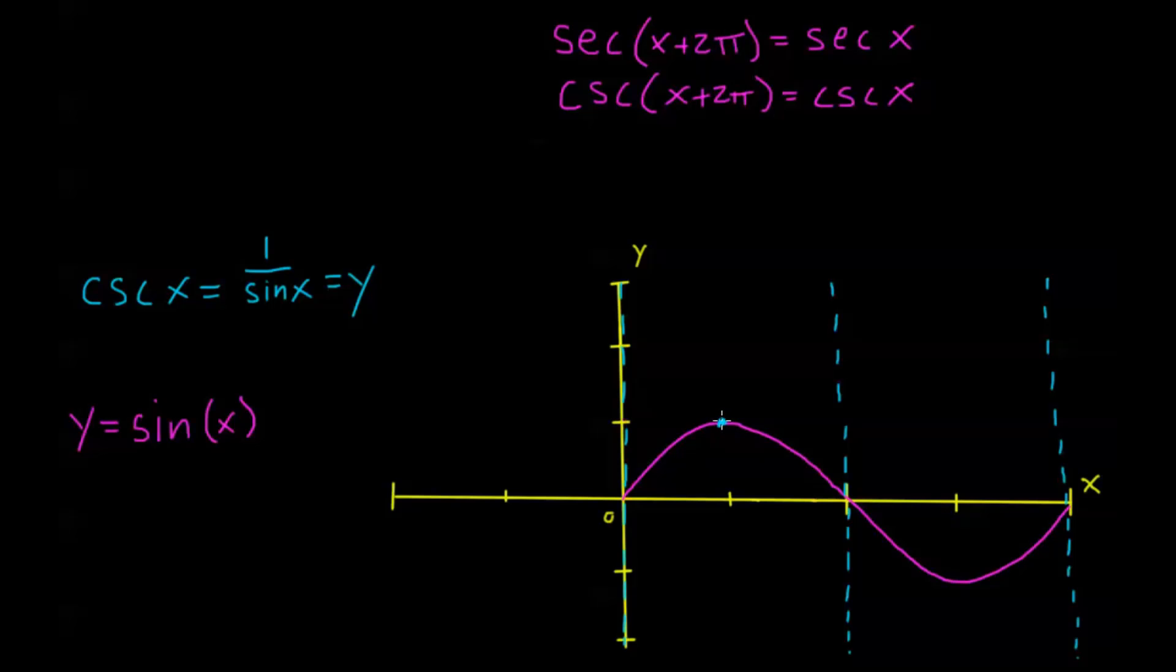So my cosecant graph is going to be 1 over sine and follow in this fashion. It's going to go larger and larger and larger, and it's going to start getting closer and closer to parallel to this asymptote. And the same thing over here. As sine gets closer to 0, cosecant gets larger and larger and larger.